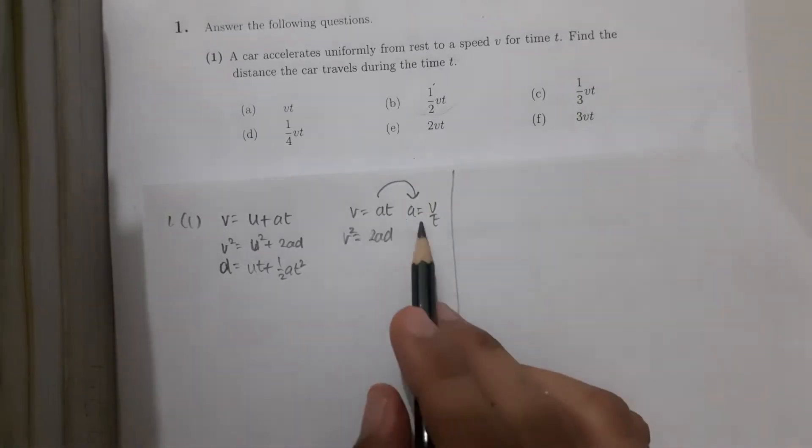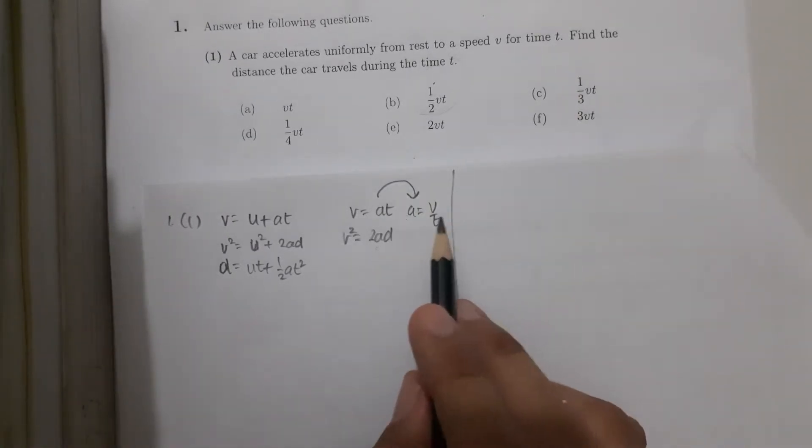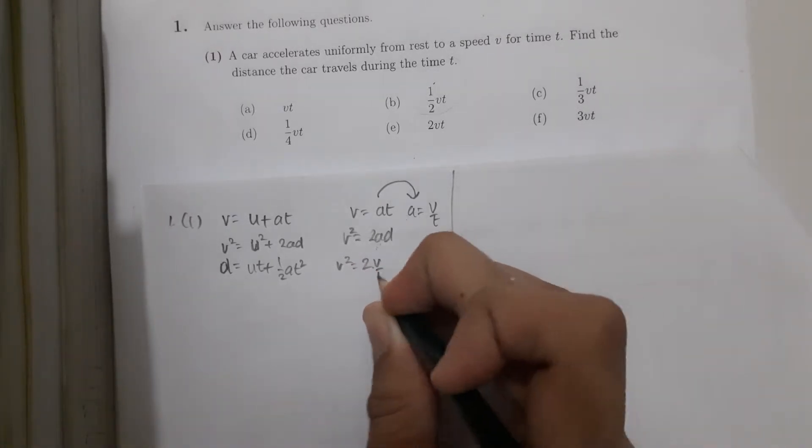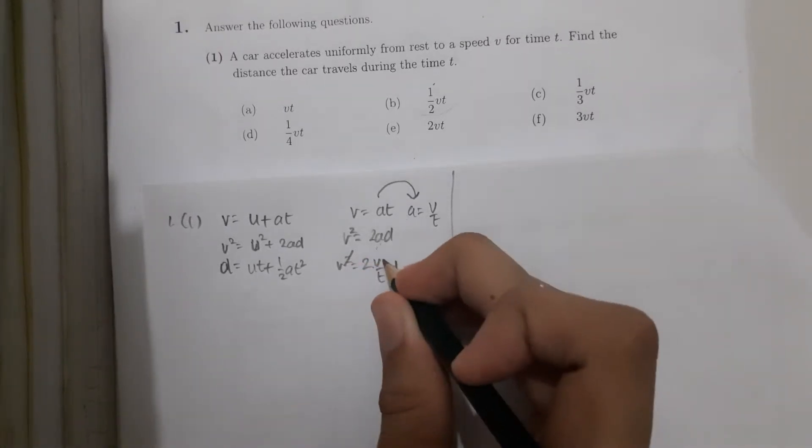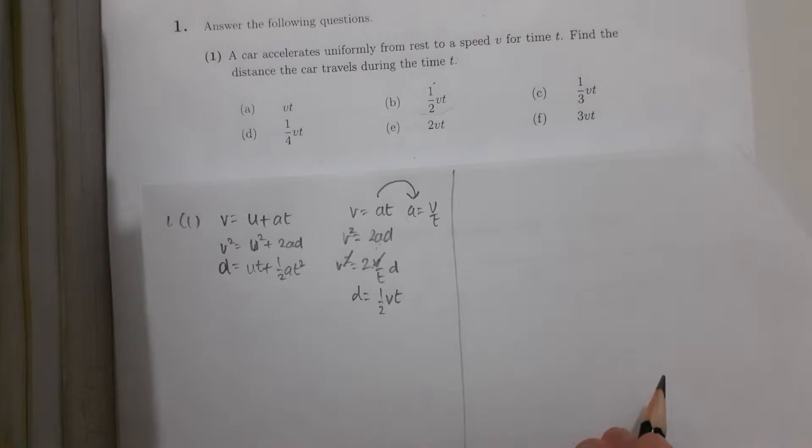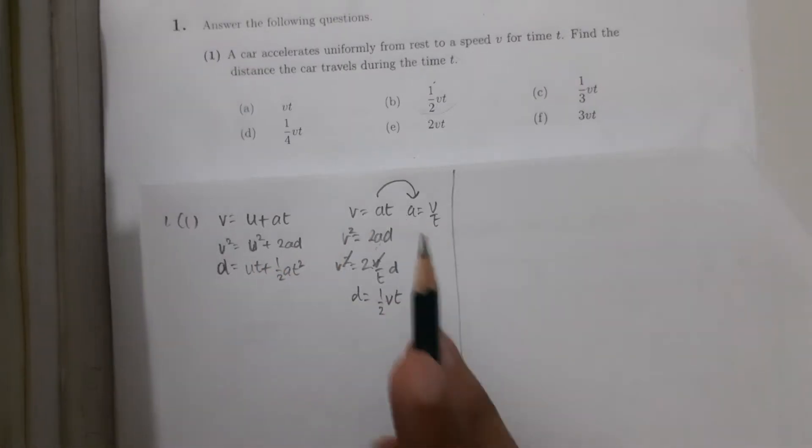Now we can change a to become v over t. And we can change a here, v over t. Cross, cross. And d equals half vt. So the answer for number 1 here is b.